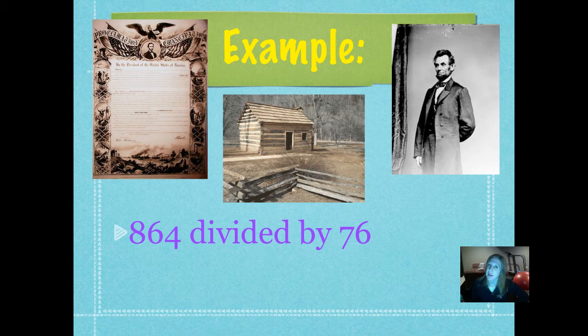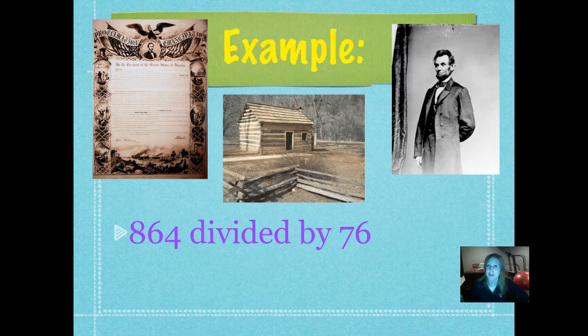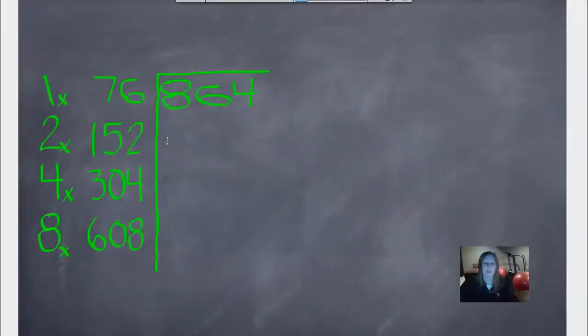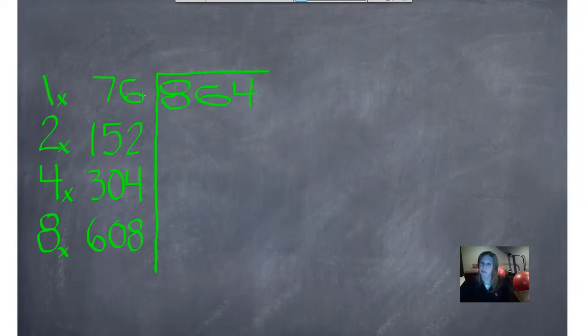Our first example problem is 864 divided by 76. So let's take a look and see how we would work this problem using doubles division. I've written the problem in the house already for you, 864 divided by 76, and I wrote down our guiding numbers down the side, which are just doubling those numbers. And then I've doubled our divisor several times. So we're going to start out looking at what number will go into 8. Nothing does, so we'll put an X over that. We're going to fill up that roof over that room in that house. And 76 will go into 86, so we'll start right there.